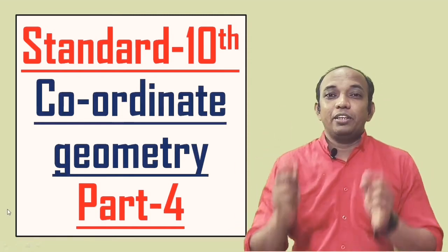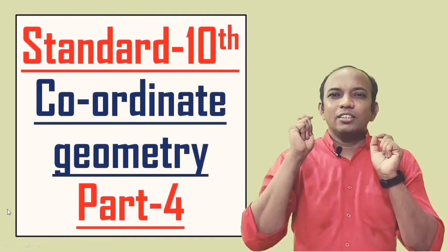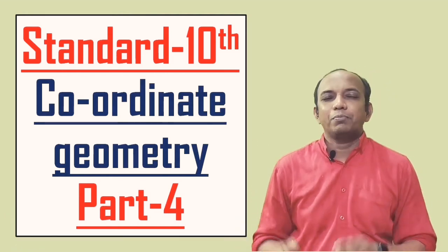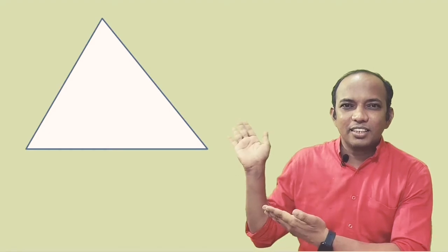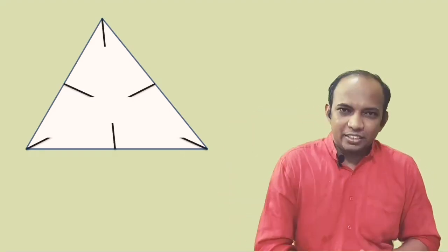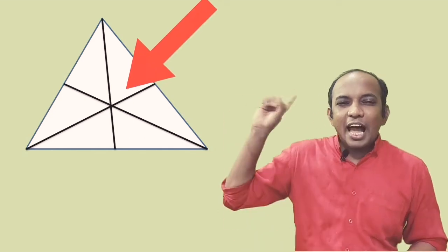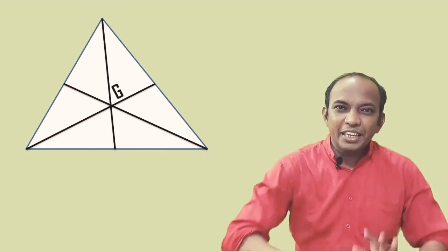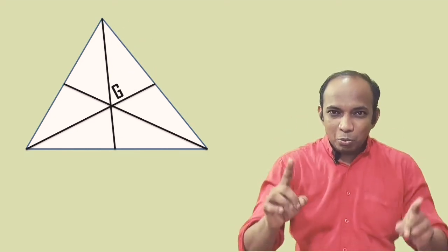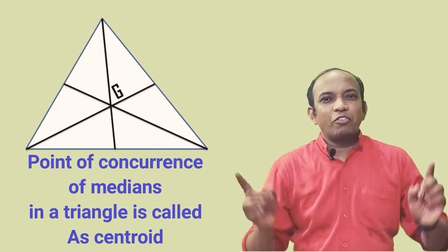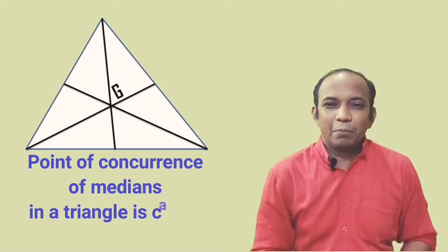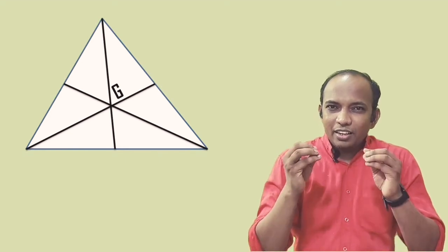Hello and welcome back to the fourth part of this coordinate geometry series. In this lecture we will try to understand the centroid formula along with a few application-based sums. For better understanding, here is a triangle on your screen. If I draw three medians, all three medians pass through a single point — that point is called the point of concurrence, let it be G. This point of concurrence of medians is called the centroid of the triangle. It always divides the median in the ratio 2:1.